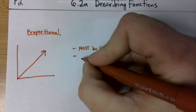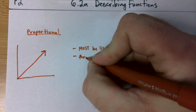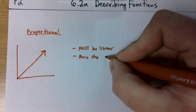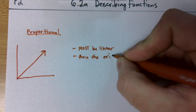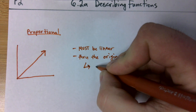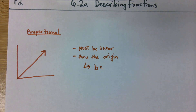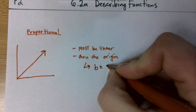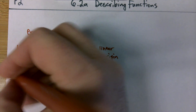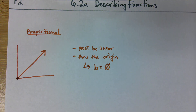It's got to go through the origin, right? Through the origin. And when we have something that goes through the origin, we know that our b must be equal to zero. Our y-intercept has got to be zero if we intercept at the origin.